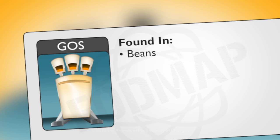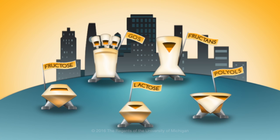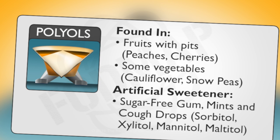Galactooligosaccharides are found in beans. Polyols are often found in some fruits with pits like peaches and cherries, and some vegetables like cauliflower and snow peas. Polyols are also added as an artificial sweetener to sugar-free gum, mints, and cough drops.